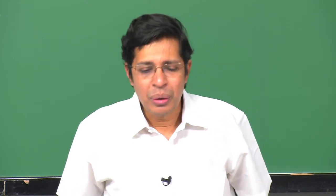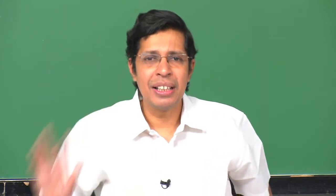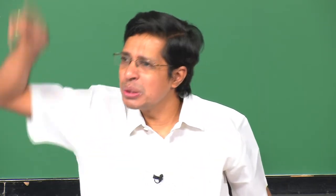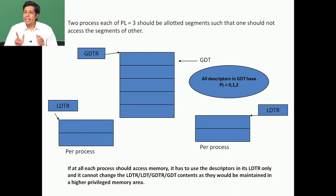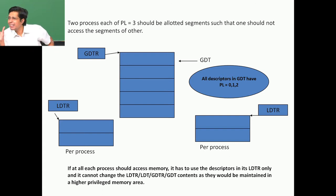The LDTR can be changed only by a privileged instruction, and the privilege level required is 0. I also have a GDTR, and the process cannot even change the GDTR. All the segments in the GDT will have privilege level 2 and below. As a privilege level 3 process, I cannot use any segment in the GDT because those segments have privilege level 2, 1, or 0 - less than 3. So I cannot use any segment in the GDT. Since I cannot change my LDTR, I can use only the segments within my own LDT.